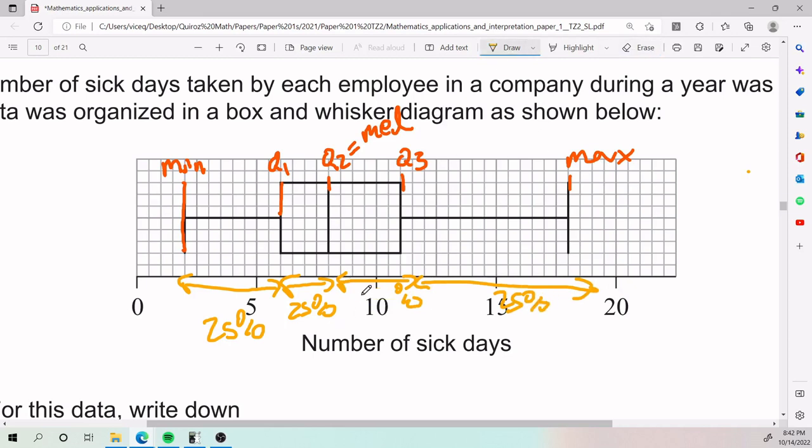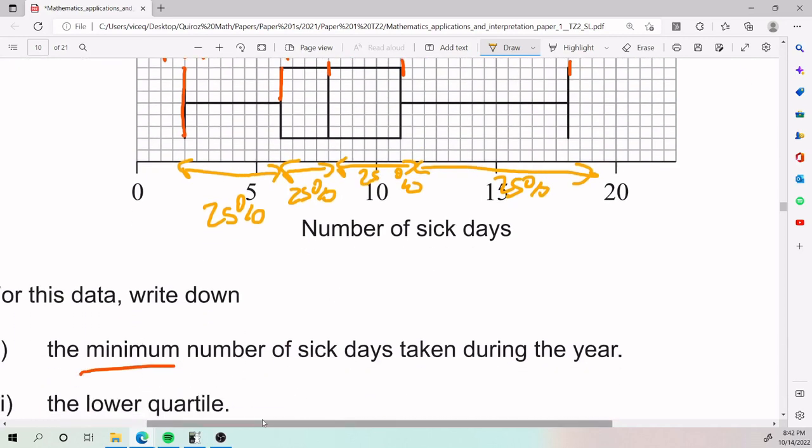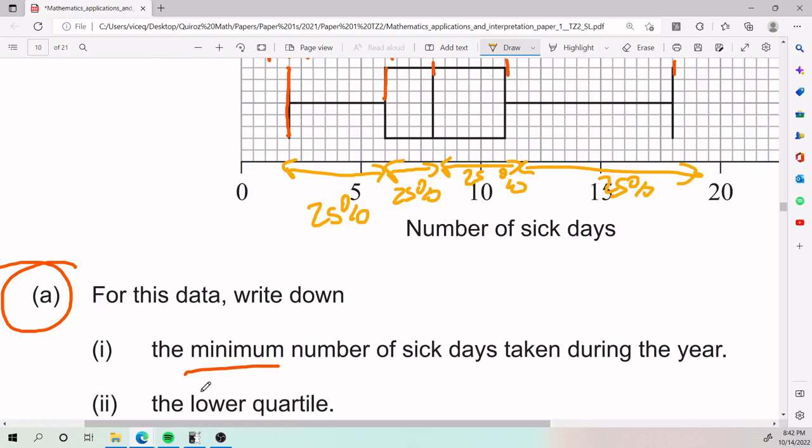And from Q3 to maximum is my remaining 25%. So that is a representation of percentages in terms of Q1, Q2, and all that stuff.